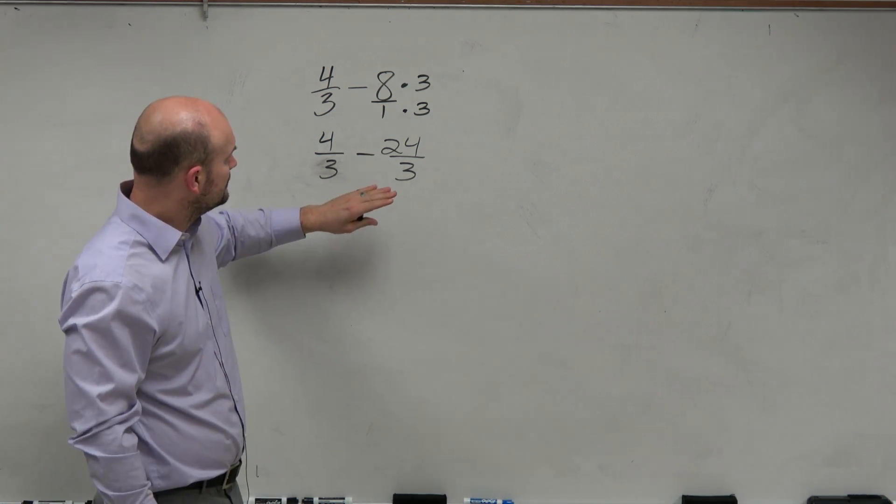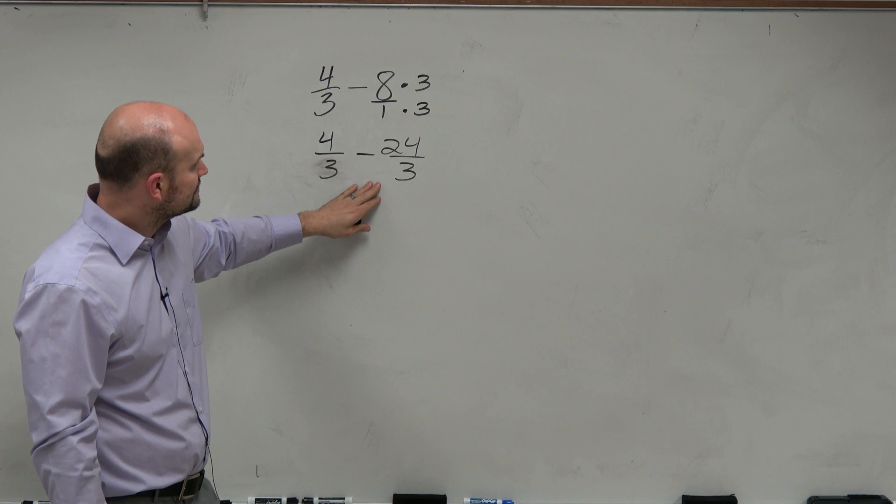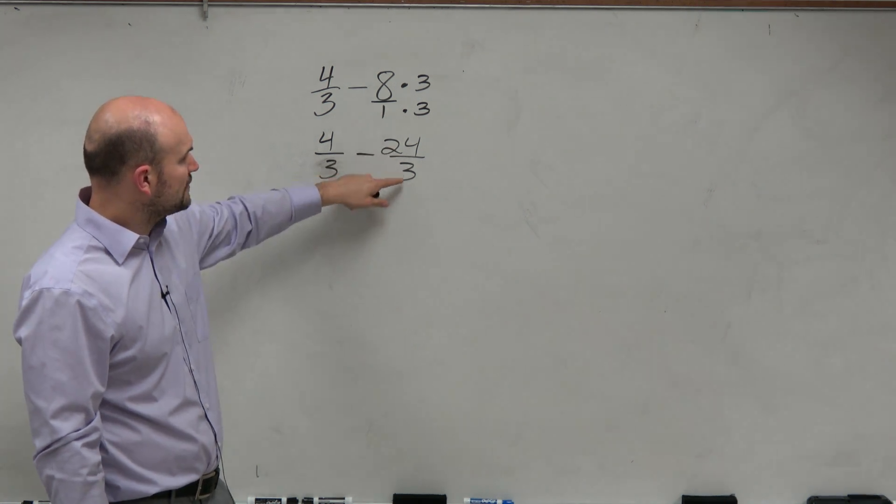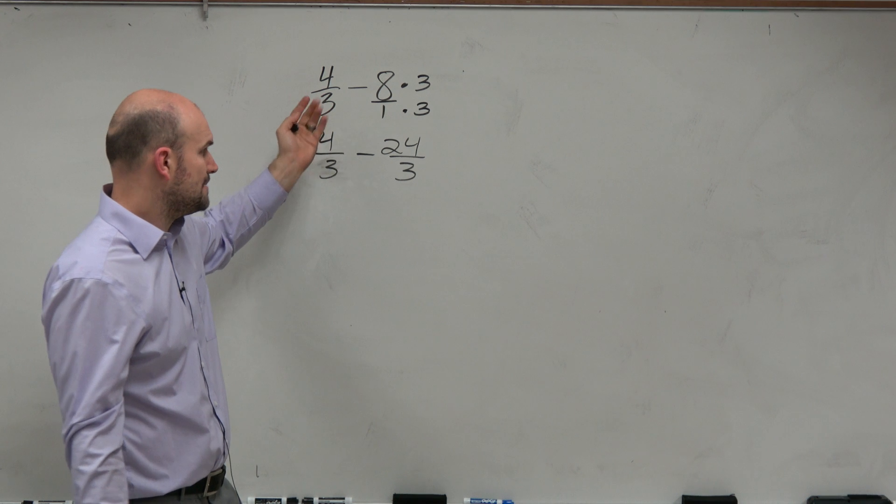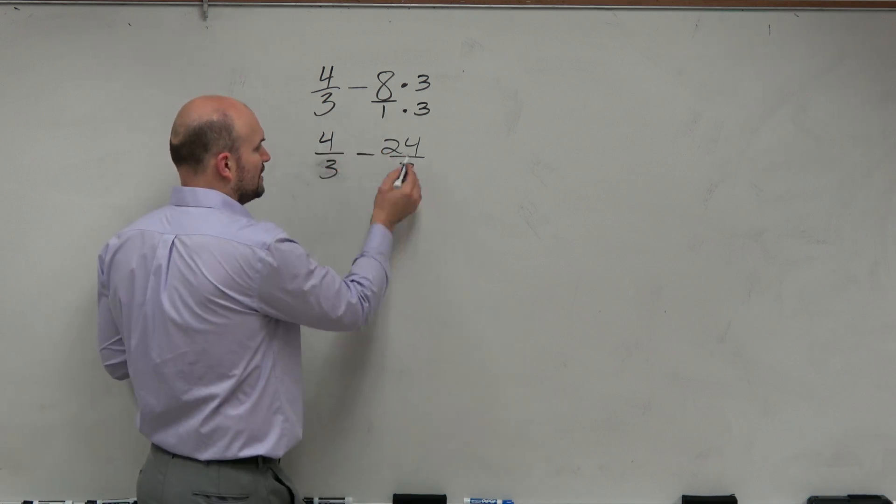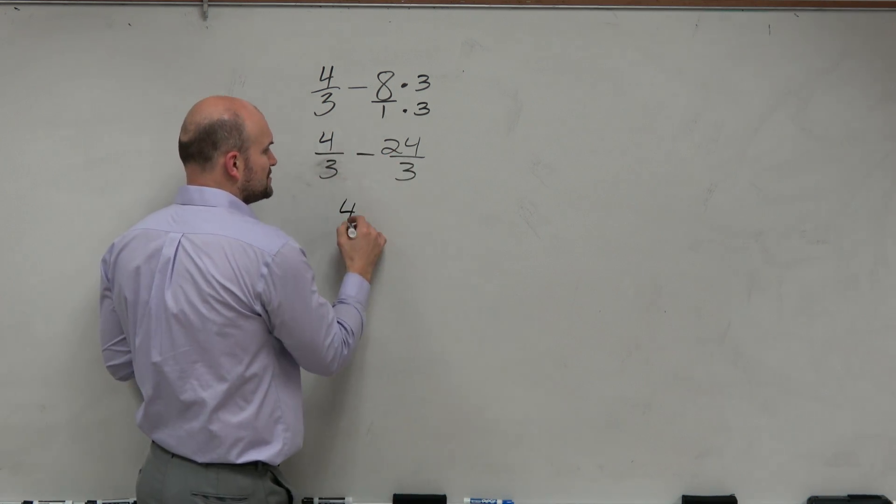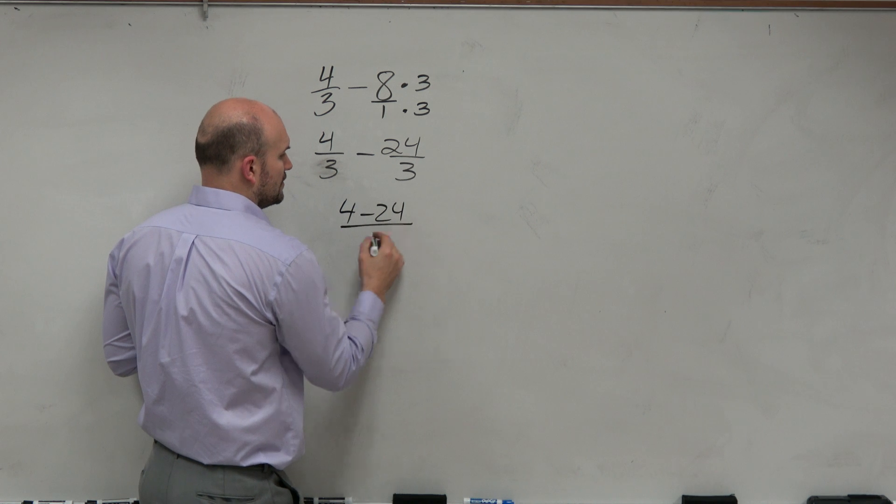So in this case, you can see now, 24 over 3 is going to be 8. So you can see how they are the same. So now, I just go ahead and apply my operation to my numerators, so it's 4 minus 24 over 3.